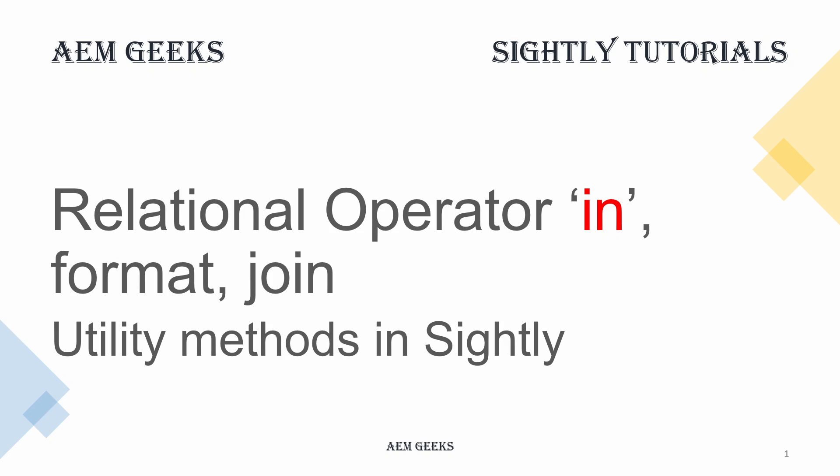I will discuss the 'in' operator, which is a relational operator you may have worked with in SQL queries. Then I'll talk about 'format' - how you can format strings when injecting variables or back-end model data within a sentence. Then I will discuss 'join' - if you have a list or array and want to print all elements within a single line or single tag, join provides a way to do that without using a loop or data-sly-list.